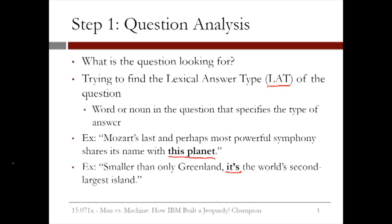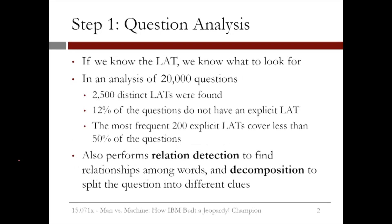We can see in these two examples that sometimes the LAT is very specific, like "this planet," and sometimes it's very vague, like "its." In an analysis of 20,000 questions, 2,500 distinct LATs were found, and 12% of the questions did not even have an explicit LAT — they had LATs like "its." Furthermore, even the most frequent 200 explicit LATs cover less than 50% of the questions. So to enhance the question analysis step, Watson also performs relation detection to find relationships among words, and decomposition to split the question into different clues.